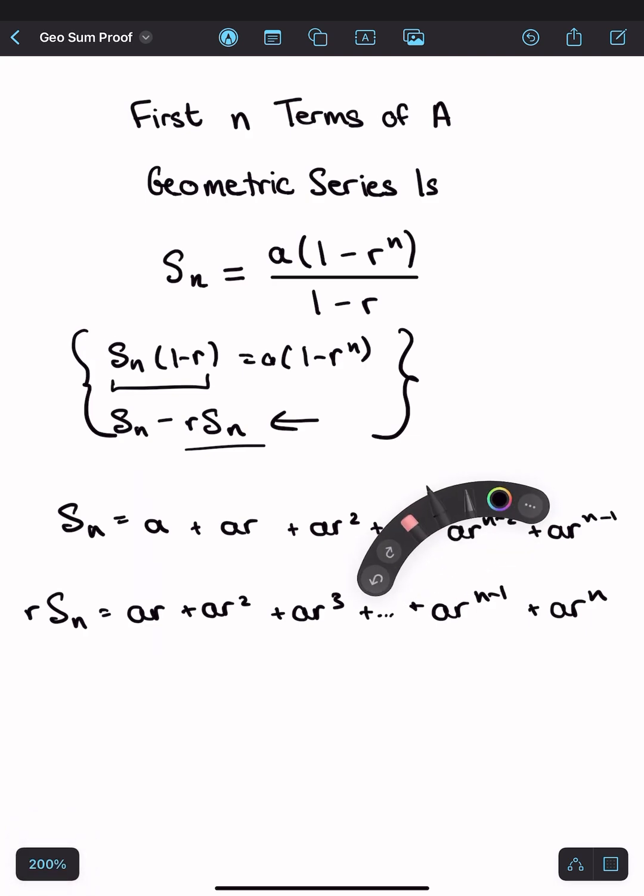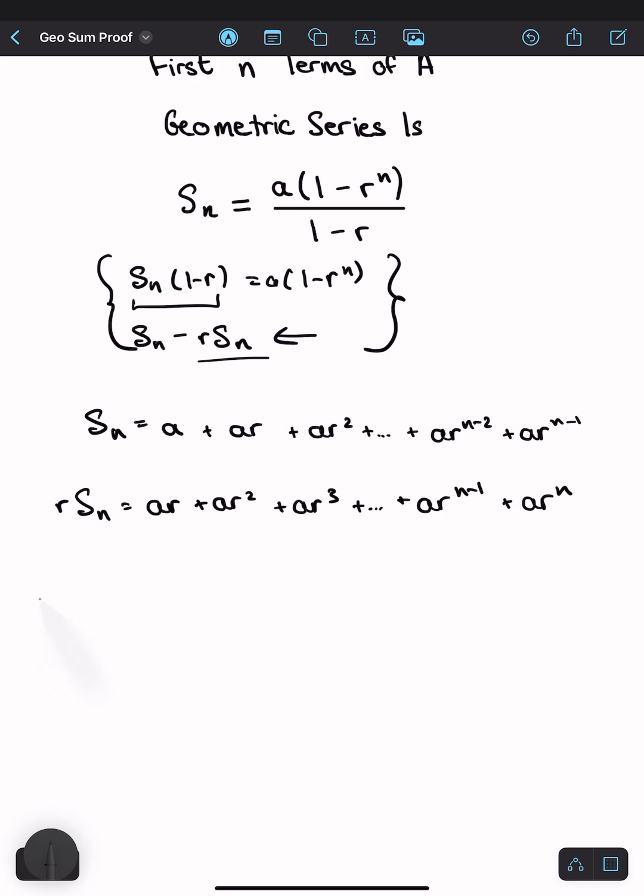This is telling me that I have to subtract the second sum from the first. So that means S_n minus rS_n equals... Now let's see what's happening here. I've got a and I don't have another a to subtract from, so that stays where it is. But if I'm doing ar minus ar that cancels and these also cancel.